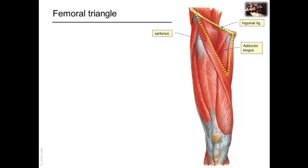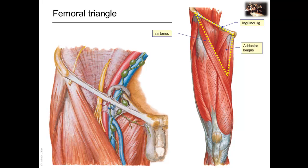The femoral triangle is a gutter-shaped triangle located in the superomedial part of the front of the thigh. It is formed by muscles and by the inguinal ligament which forms the base of the triangle. The major blood supply and one of the nerves of the lower limb, the femoral nerve, enter into the thigh from the abdomen by passing under the inguinal ligament and into the femoral triangle.